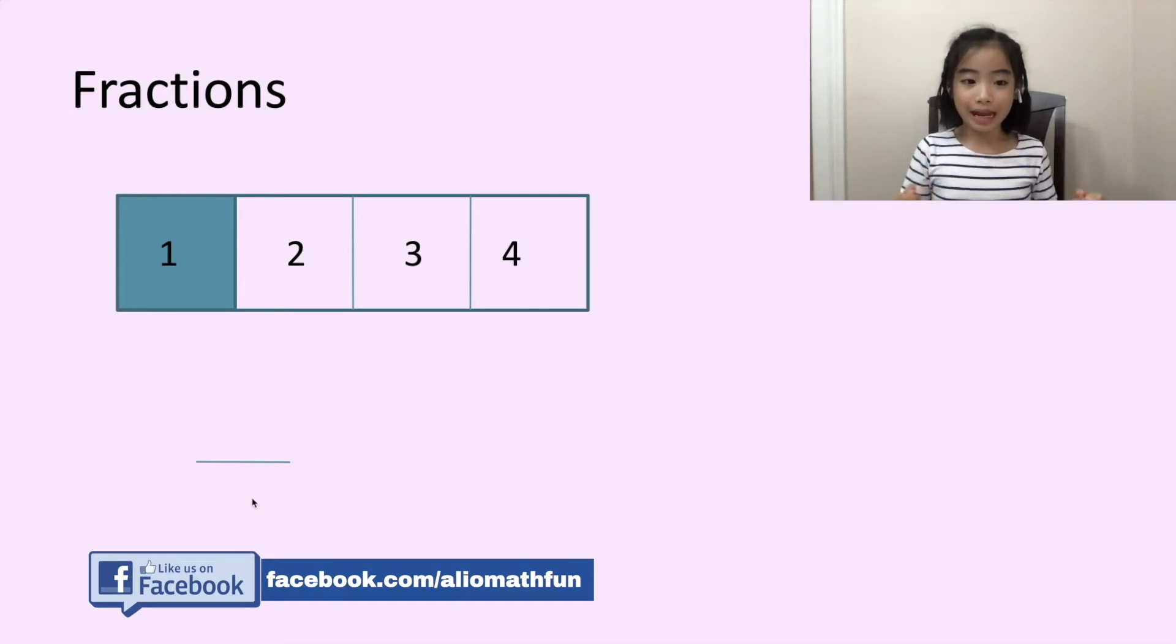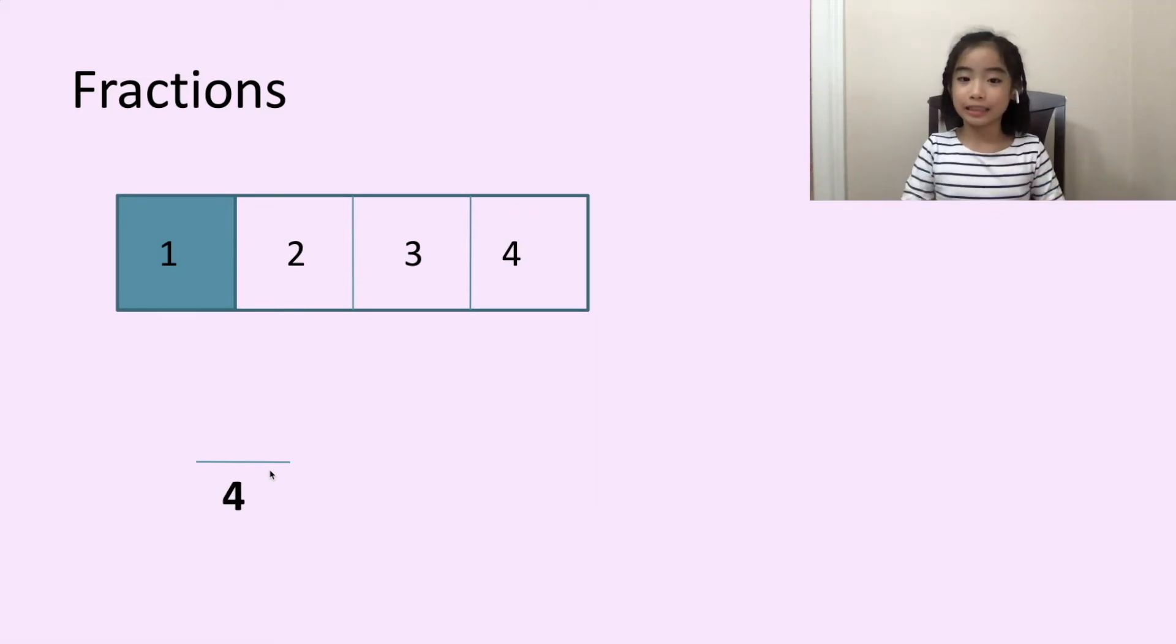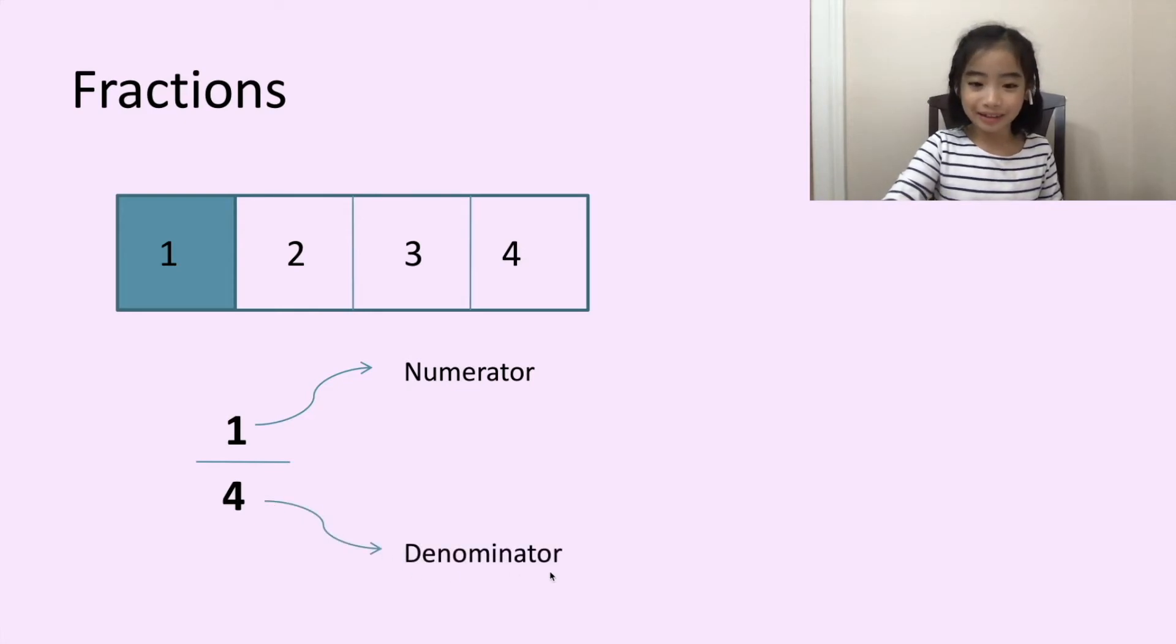So, underneath the line, we write four. Because the rectangle is divided into four equal pieces. On top of the division line, we write one. Because one of the pieces are shaded in. The number on top is called the numerator. The numerator tells us how many are taken away from a whole. The number on the bottom is called the denominator. The denominator tells us how many pieces are out there.